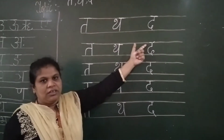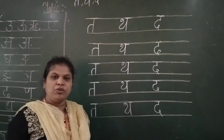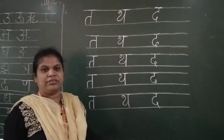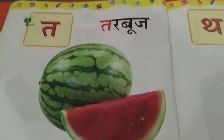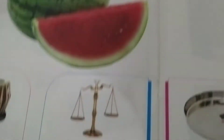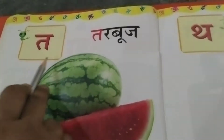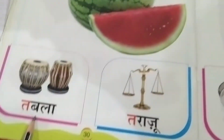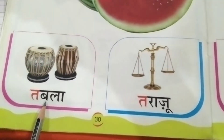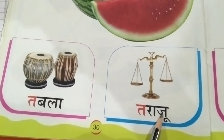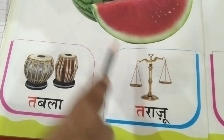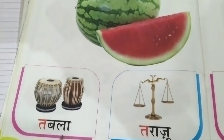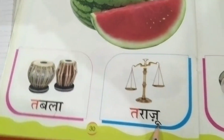Now I will show you the picture from your textbook related to these letters. From textbook page number 30 — Tha: Tharboj means watermelon. Tha: Thabala. Tha: Tharaju means weighing machine. Tharboj, Thabala, Tharaju.